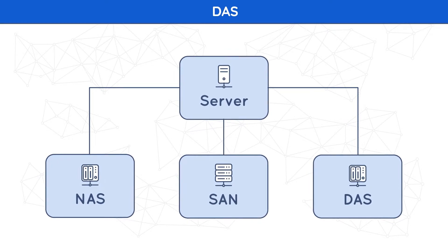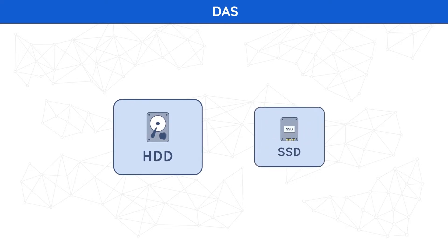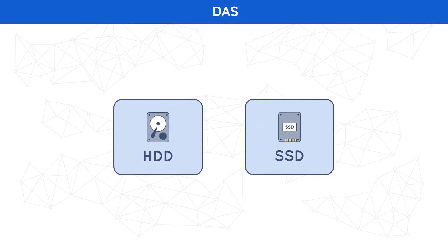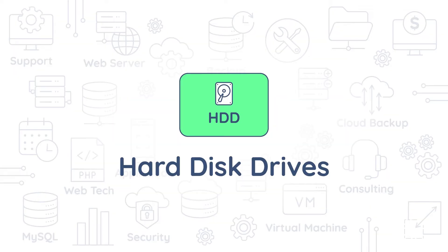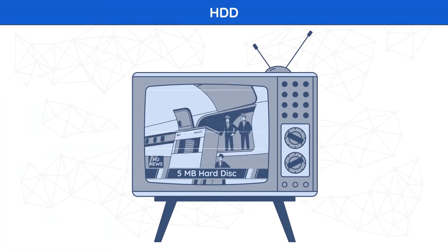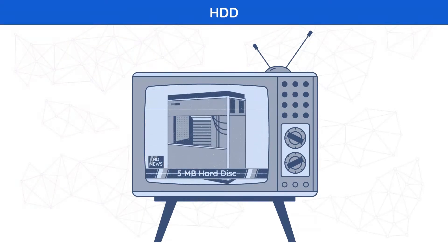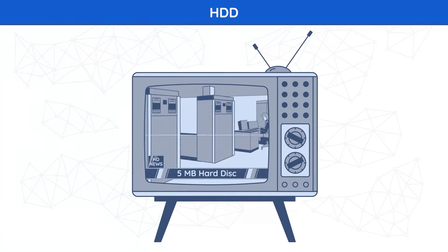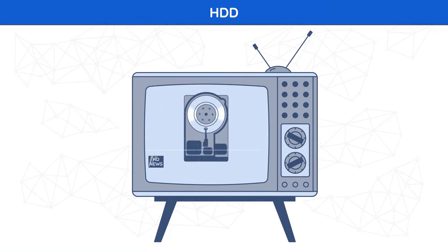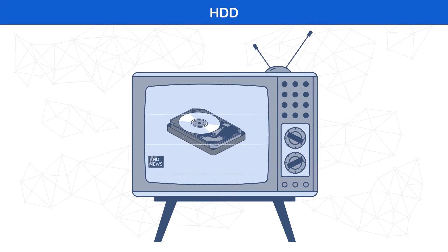Now let's talk about the storage media used in modern infrastructures: hard disk drives — also called spindle drives or HDD — and solid-state drives, called flash or SSD. Hard disk drives, or spindle drives, are non-volatile data storage devices. HDDs first appeared in the 1950s, and rapid advancement in technology led to an increase in capacity by orders of magnitude — modern HDDs can store up to 20 terabytes of data with a price as low as three cents per gigabyte.